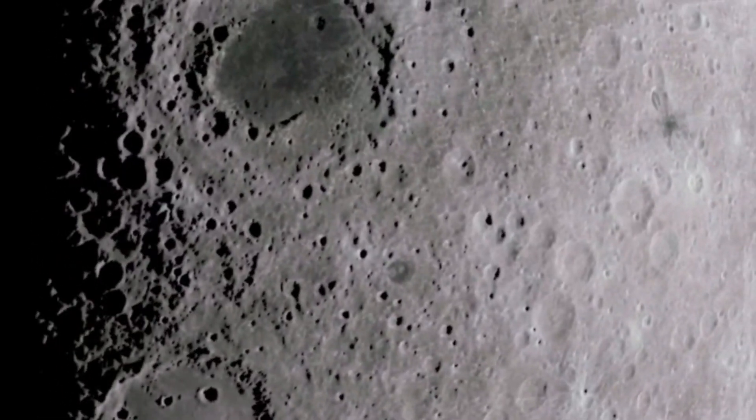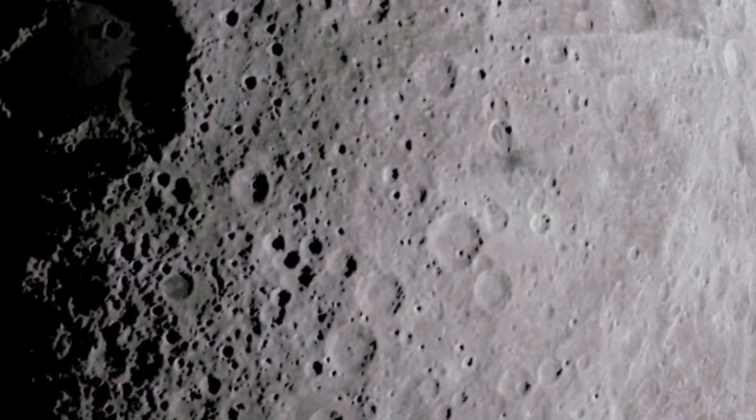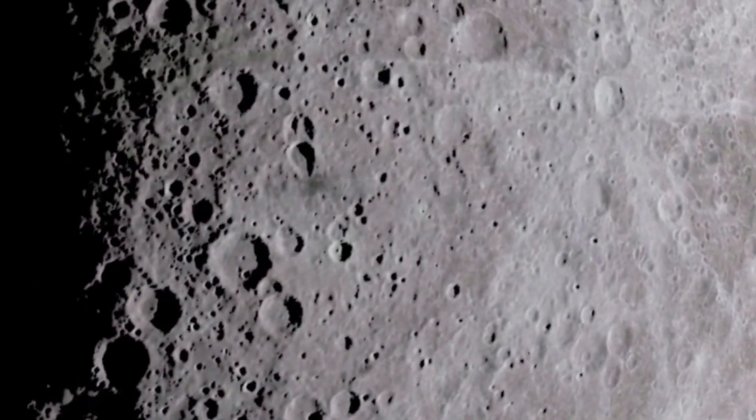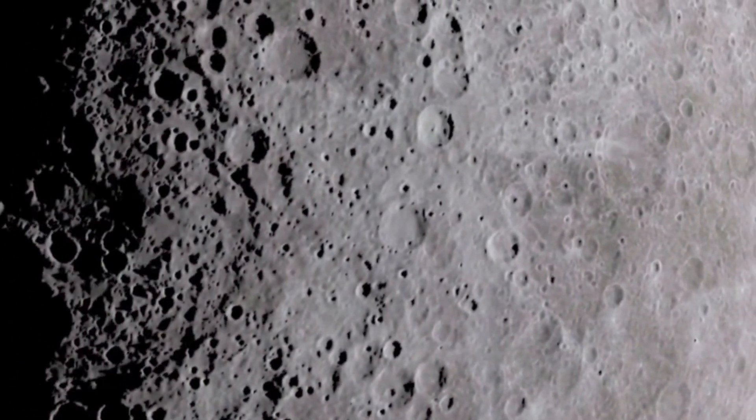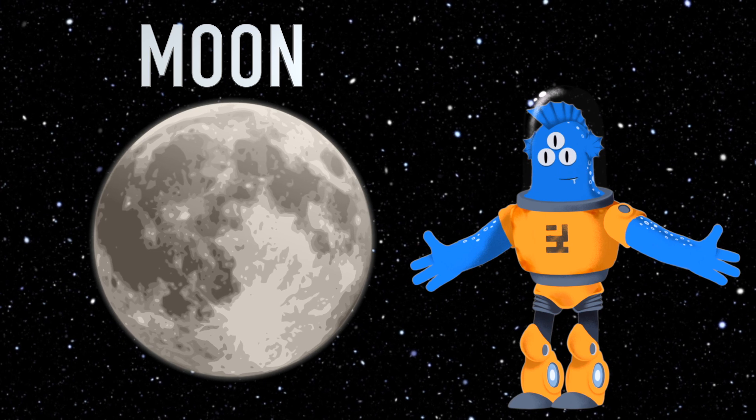The moon is famous for its craters, and they're like cosmic potholes. These craters were made by asteroids and comets crashing into the moon's surface a long, long time ago.